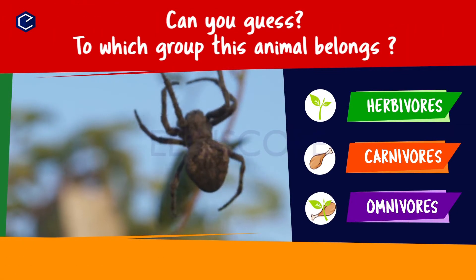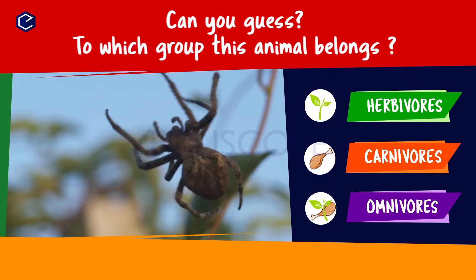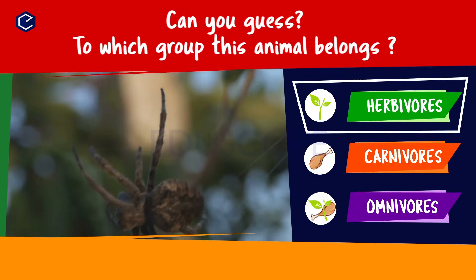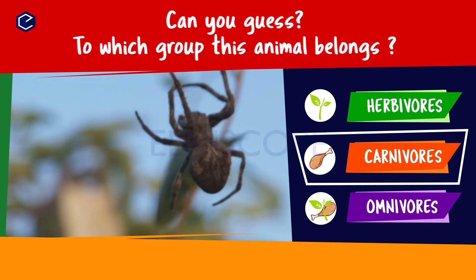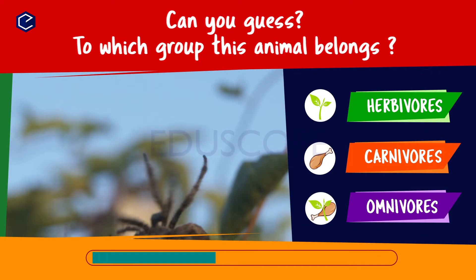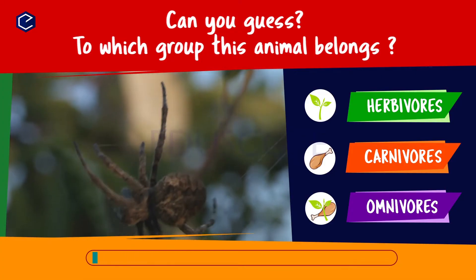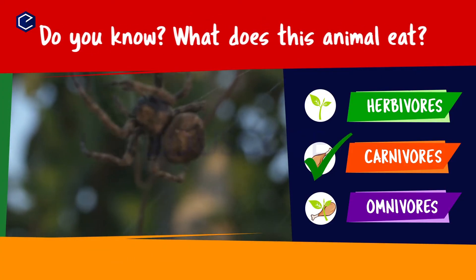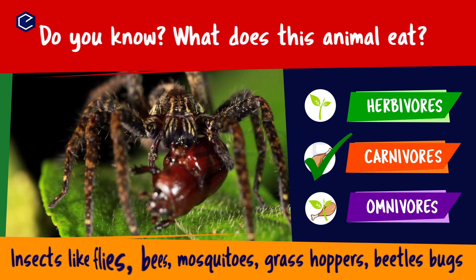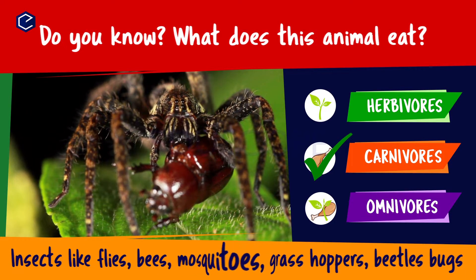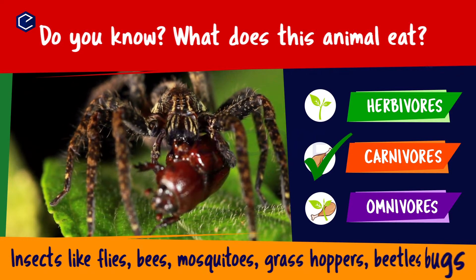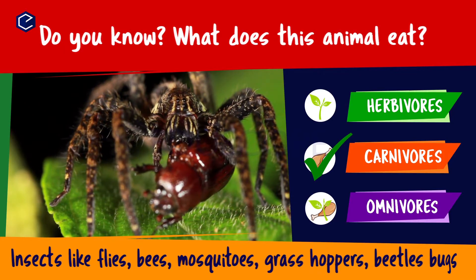Can you guess to which group this animal belongs? Herbivores, carnivores, omnivores. Do you know what this animal eats? A spider eats insects like flies, bees, mosquitoes, grasshoppers, beetles, bugs. So spider is a carnivore.